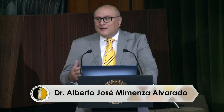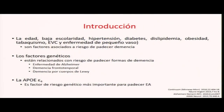Sin duda conocemos que el factor de riesgo principal para padecer un proceso demencial es la edad, pero hay otros factores de riesgo asociados como la hipertensión, la diabetes, la dislipidemia y la obesidad. Sin embargo, el componente genético, incluso en las formas esporádicas de neurodegeneración como la enfermedad de Alzheimer, es el principal factor de riesgo genético. El alelo Epsilon IV es considerado el factor de riesgo más importante para padecer demencia de tipo Alzheimer.